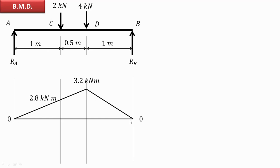Using these values, we draw the bending moment diagram: bending moment at the support is 0, at C it is 2.8 kN·m, at D it is 3.2 kN·m, and it becomes 0 at point B. In this way we can draw the SFD and BMD for a simply supported beam carrying point loads. Thank you very much for watching.